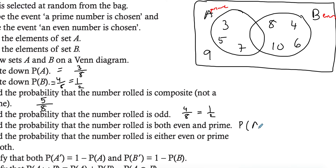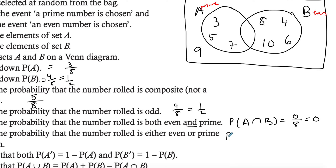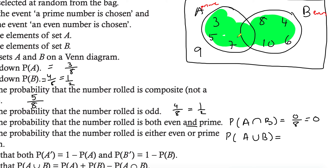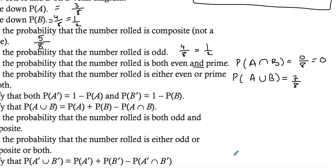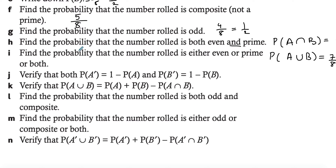To find the probability of a number being both even and prime, using the 'and' rule we look at the intersection. There's nothing in the intersection, so it's zero over eight, which is just zero. For the probability of a number being either even or prime or both, the 'or' means union. Looking at the highlighted area, we have seven elements, giving seven over eight.